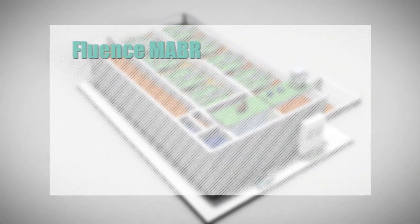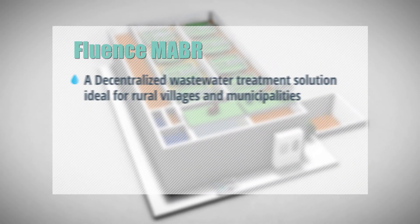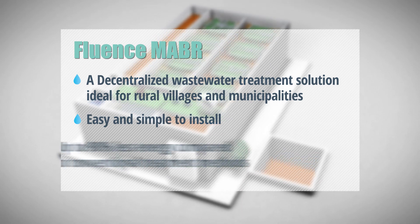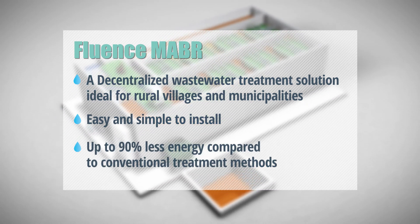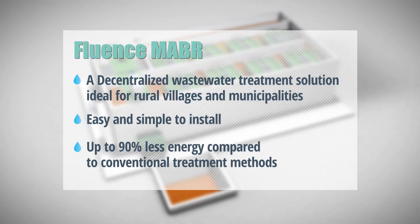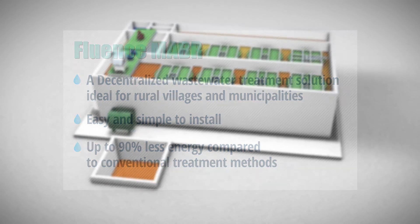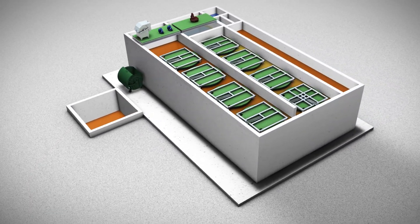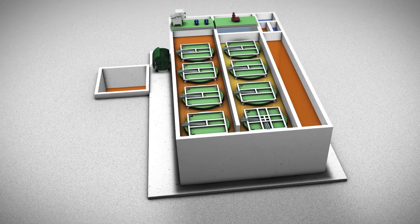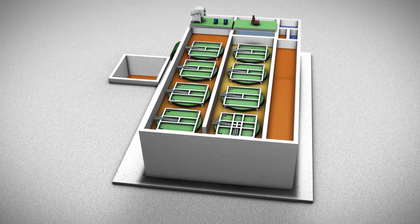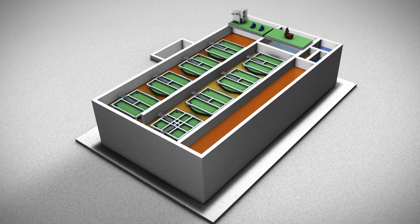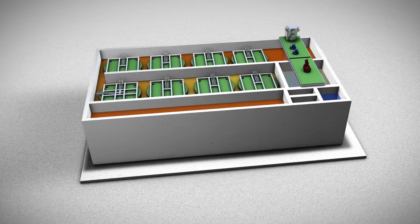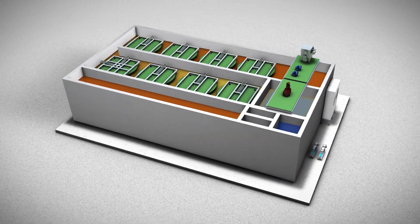Fluence MABR is an innovative biological treatment technology for wastewaters, requiring up to 90% less energy compared to conventional treatment methods. The Fluence MABR meets the most stringent global standards for water reuse for irrigation and discharge to the environment. The construction of the MABR system is simple — just follow these key steps.